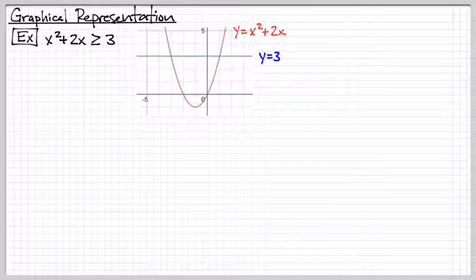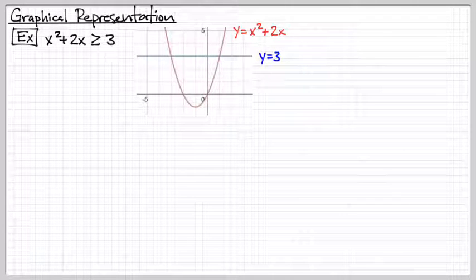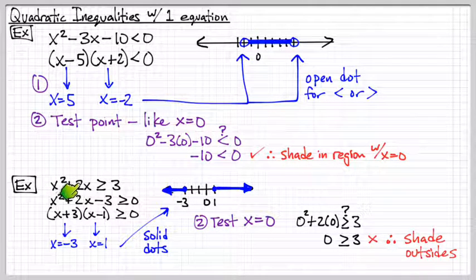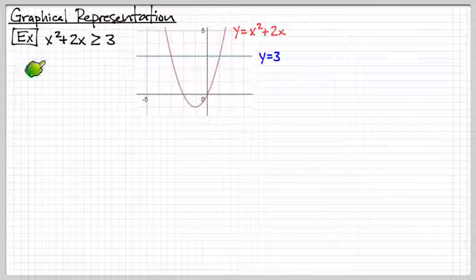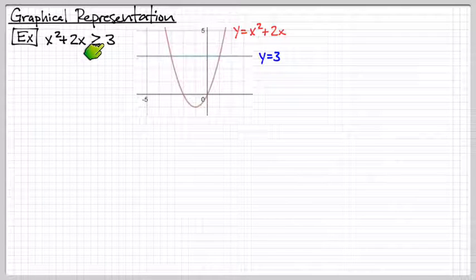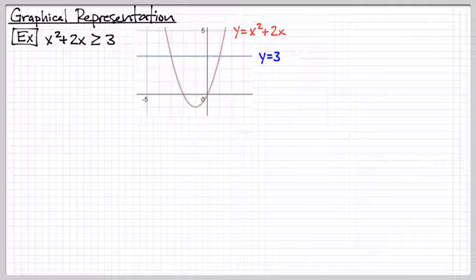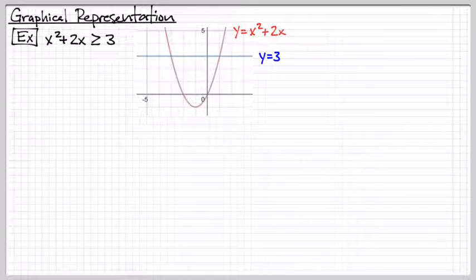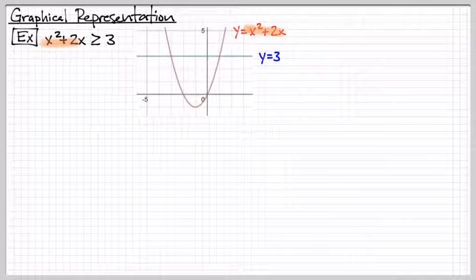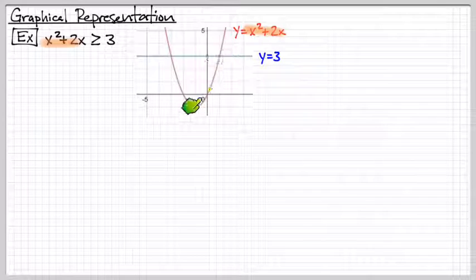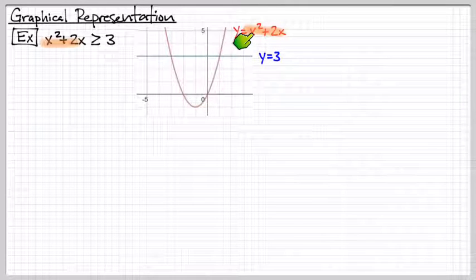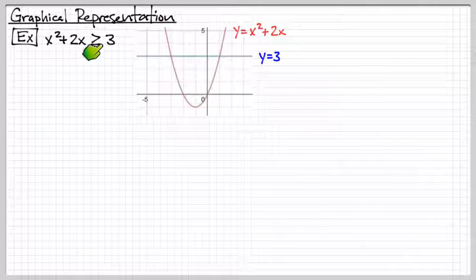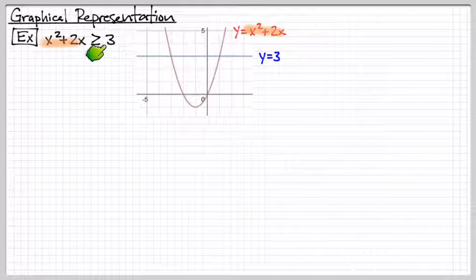Now, lastly, I want to kind of give a different perspective of this same inequality. This is the same one, x squared plus 2x is greater than 3. But I want to show a different way of illustrating it. So I'm going to take my left-hand side and I'm going to graph this. So this here, the red, you can see the red parabola here is this equation. The right-hand side right here is y is equal to 3. So I'm just going to graph that out here.